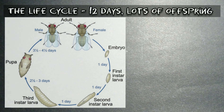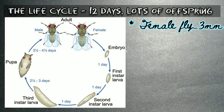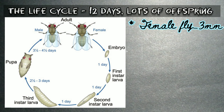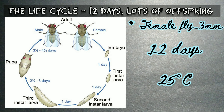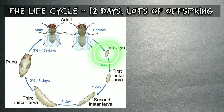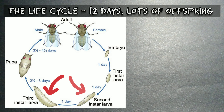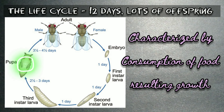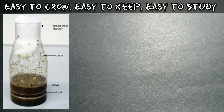The female fruit fly, about 3 mm in length, will lay between 750 to 1,500 eggs in her lifetime. The life cycle of the fruit fly only takes about 12 days to complete at room temperature. After the egg is fertilized, the embryo emerges in about 24 hours. The embryo undergoes successive molts to become the first, second, and third instar larvae. The larval stages are characterized by consumption of food and rapid growth, followed by the quiescent pupal stage, during which there is a dramatic reorganization of the body plan, followed by the emergence of the adult fly.